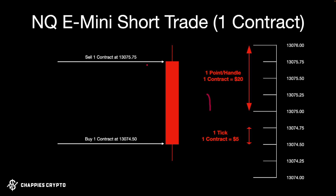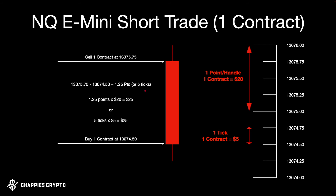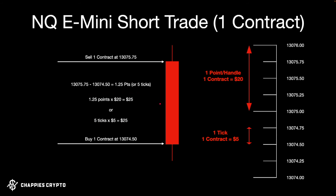To take a short, you place an order to sell one contract at the top price level — so rather than buy, you start off with selling. Then you buy one contract back at the lower level. In your account you'd have minus one contract at the start, then when you buy one back you go back to zero positions. The profit calculation is the same: 1.25 points times twenty dollars equals twenty-five dollars, or five ticks times five dollars equals twenty-five dollars.